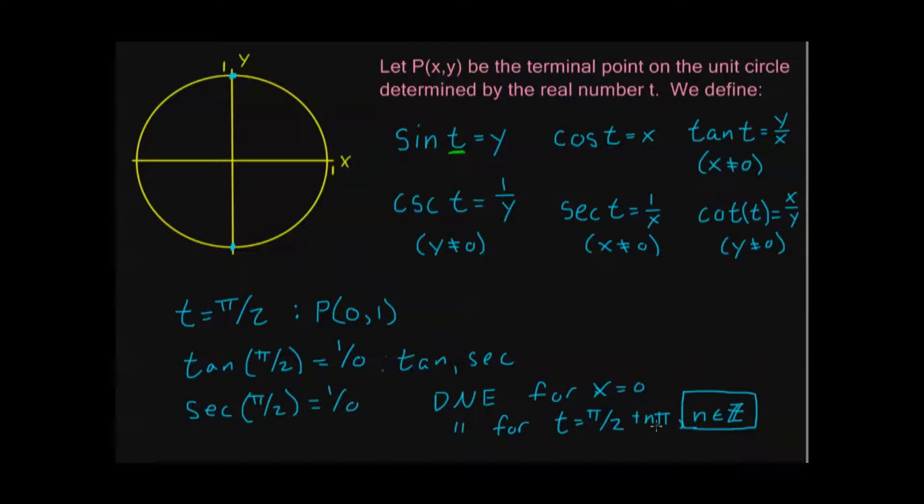So, n is 0, gives me π over 2. If n is 1, that gives me, this point down here, after I've gone around, 3π over 2. If n is negative 1, that gives me negative π over 2, etc. So, this is a nifty way for me to kind of denote all of the infinite values of t in a very precise way for which these functions are not defined. So, if you remember, tangent and secant are not defined for t equals π over 2 plus nπ.